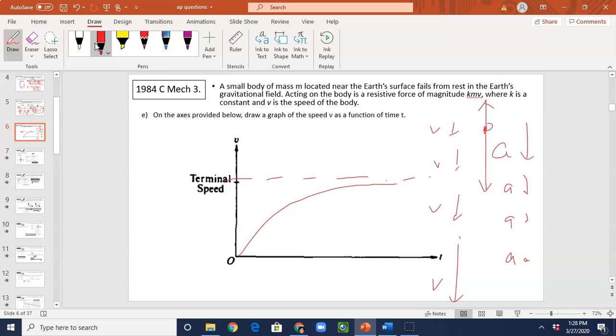So acceleration is smaller and smaller. So the graph looks like this. Your slope. Slope equals to acceleration. So slope should decrease. Your slope will decrease. So your slope becomes smaller and smaller. Eventually it's flattening up. That means slope equals to zero. Acceleration equals to zero. Terminal velocity has been reached. So that is your graph.